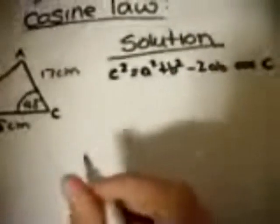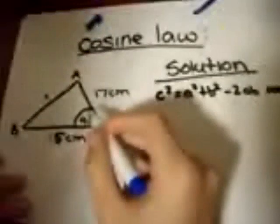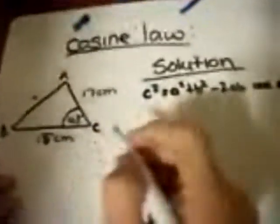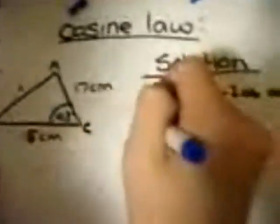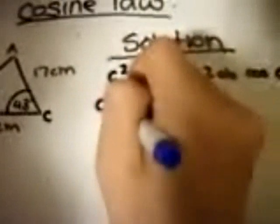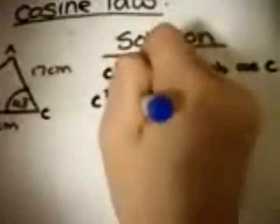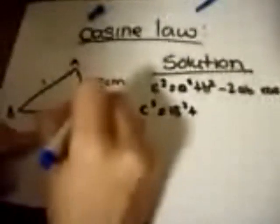We then need to substitute our known values into this formula. C squared remains C squared because we don't have a side for it. So C squared equals A squared is 15 squared plus side B is 17, so 17 squared.